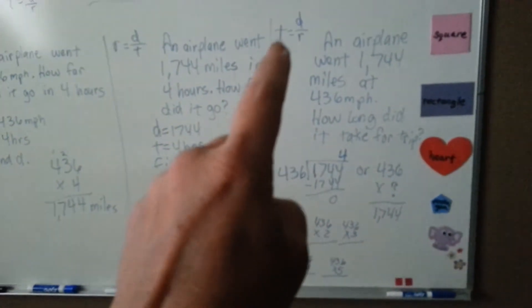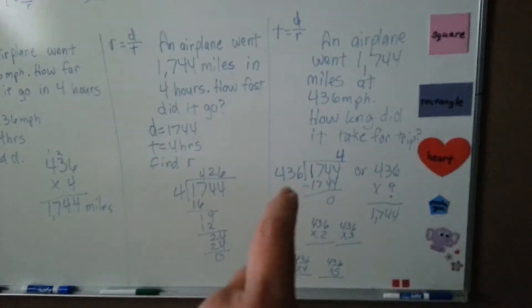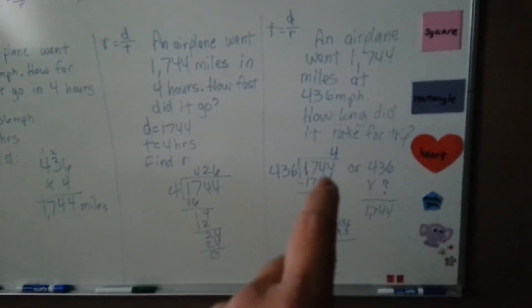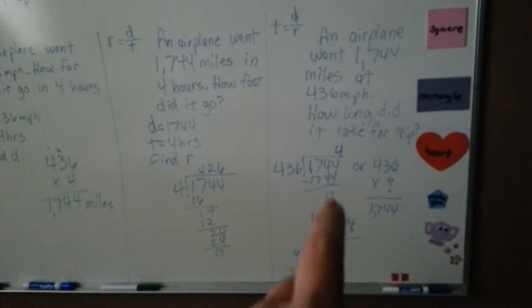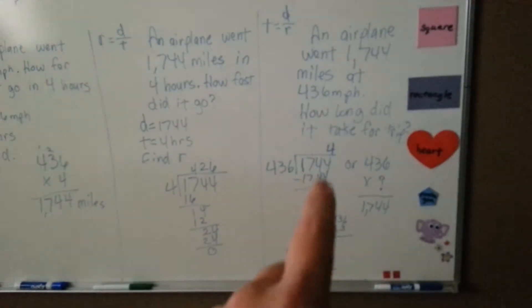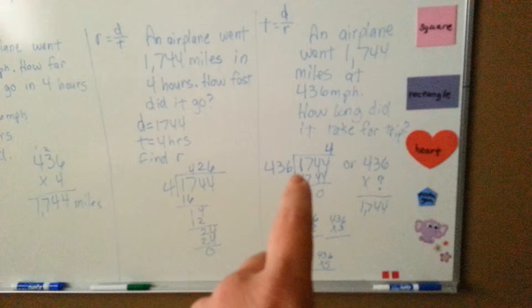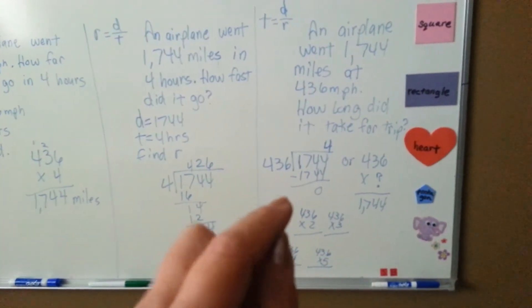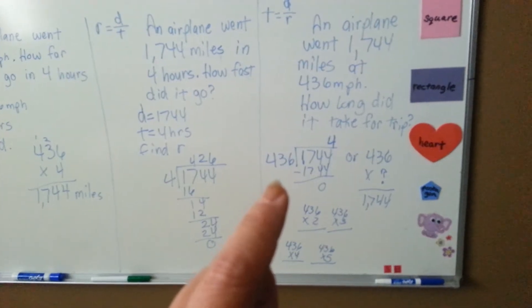So now you're trying to find the time. You could either divide the 436 into 1744, which will come out evenly as 4. Or instead of doing a very difficult division problem like that, division is the opposite of multiplication and vice versa. We know we could multiply the answer to get it.